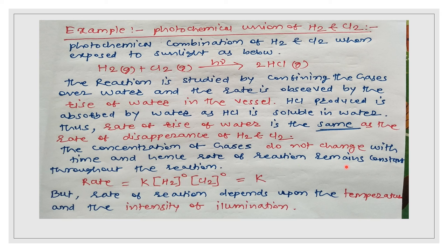Hence the rate of reaction remains constant throughout. In symbolic form, rate = K × [H2]^0 × [Cl2]^0 = K × 1 × 1 = K, which is constant. The rate of reaction depends upon the temperature and the intensity of illumination.